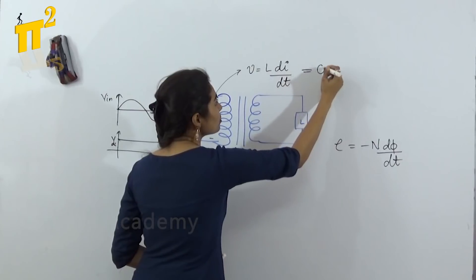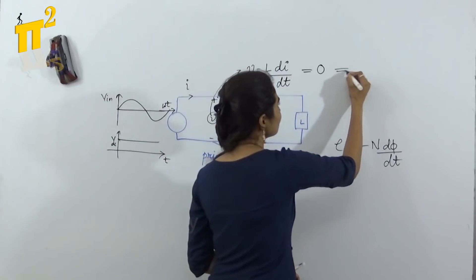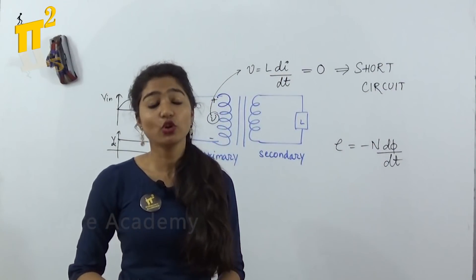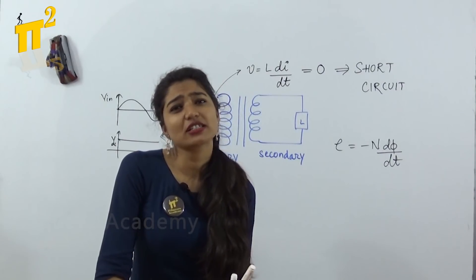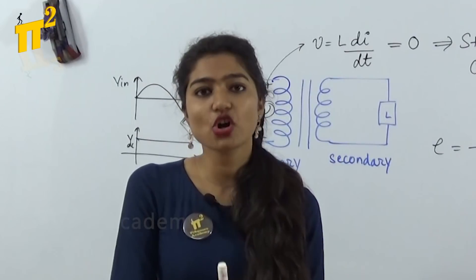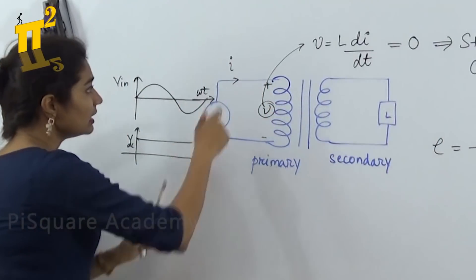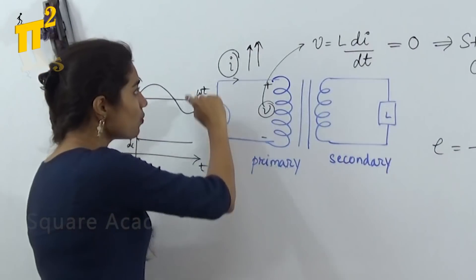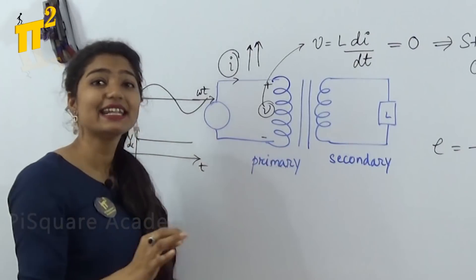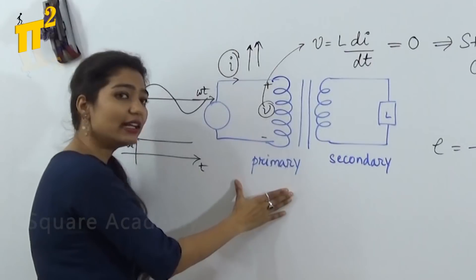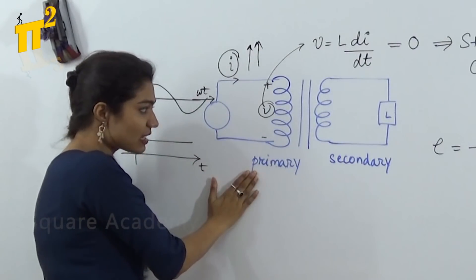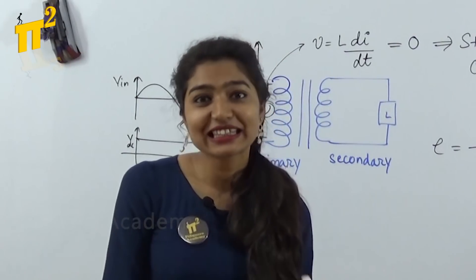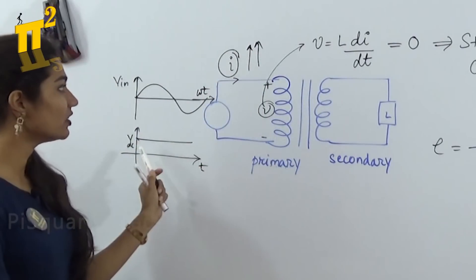Voltage zero — what does it indicate? A short circuit. Voltage zero means short circuit. Now what does a short circuit do to your system? If there is a short circuit, there will be too much current in the system. The current I will increase enormously because there is a short circuit — resistance is zero. So once this current increases, your primary winding gets damaged. Your primary side is damaged, but your secondary side is perfectly safe. So in order to protect your transformer, we avoid giving a DC supply.